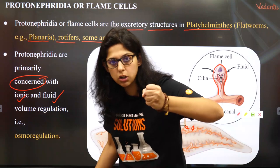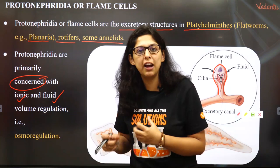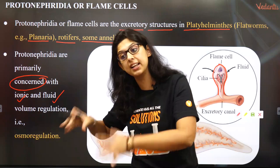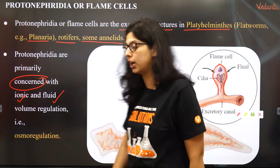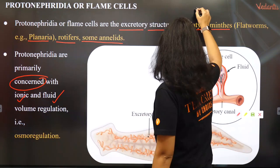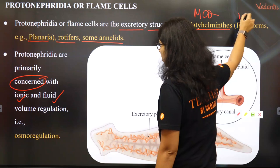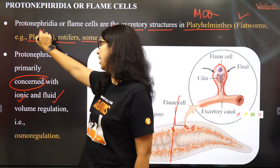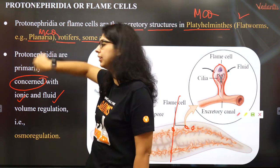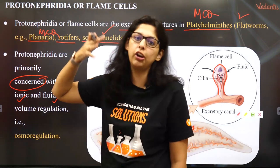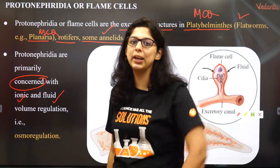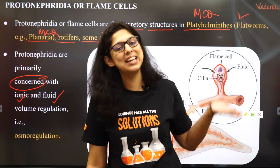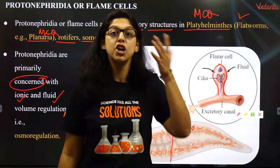Protonephridia are primarily concerned with ionic and fluid volume regulation. Solutes attract solvents, so to excrete something, ions are thrown out first and water follows. This is an MCQ point — flatworms, planaria. These are the primary excretory organs, just like green glands in crustaceans or kidneys in mammals.